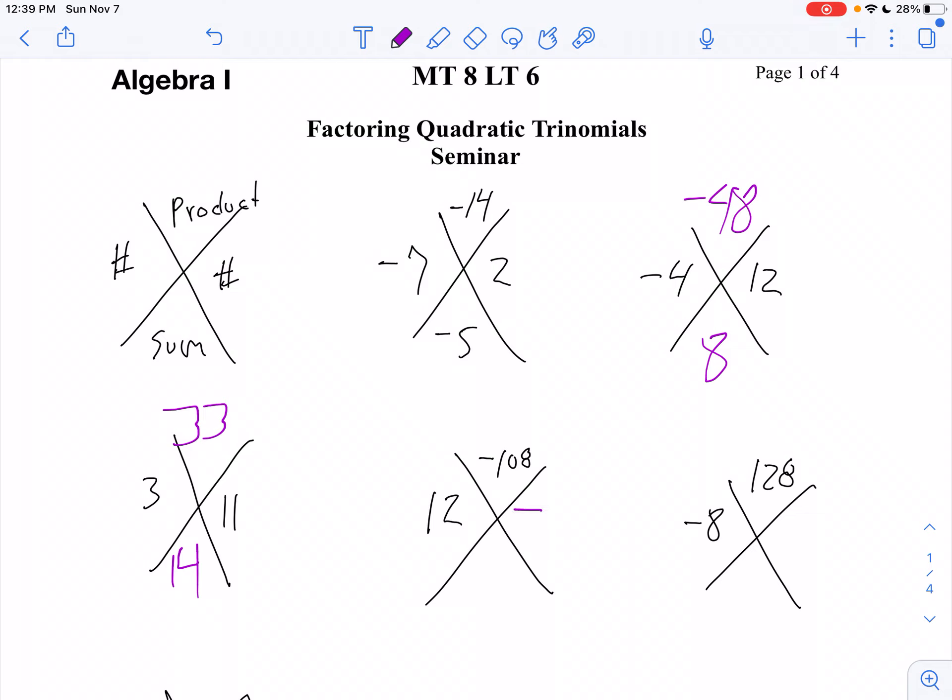And then we think 12 times what is 108? Well, 12 times 9 is 108, so negative 9 will be my number. And then the number below, I'm going to add 12 and negative 9, and I'll say 3.